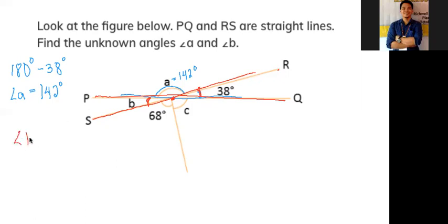If angle b is equal to angle RCQ, therefore angle b is also 38 degrees. So we can put here angle b is 38 degrees.